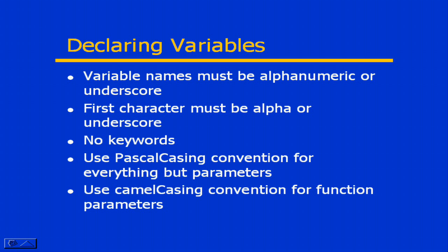When declaring variables, there are some basic rules we have to follow. First of all, variable names must be alphanumeric or underscore, and the first character must be either a letter or an underscore — you cannot use a numeric character as the first character. You also need to stay away from C# keywords; no keywords are allowed as variable names.